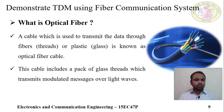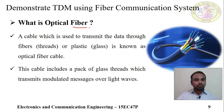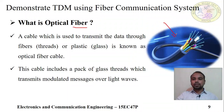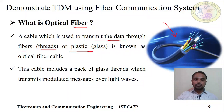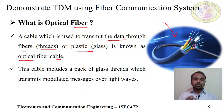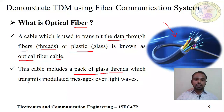Now, what is fiber optic cable? The cable which is used to transmit data through fiber threads of plastic or glass is known as fiber optic cable. Fiber optic cable has a center glass core with plastic cover and protective jacket. This cable includes a pack of glass threads which transmits the modulated message over light waves — this is called fiber optic cable.